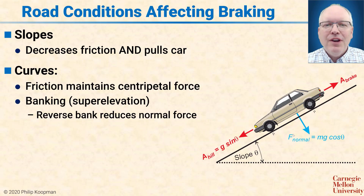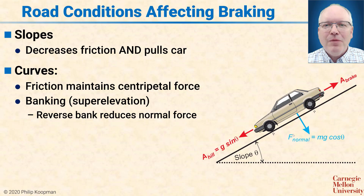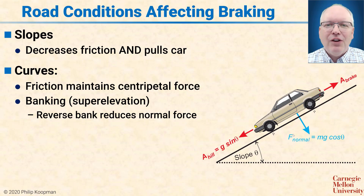Curves have similar issues. Some of that friction force of the tire contact patch is being used to pull you around the curve. That frictional force, having partially been spent on the centripetal force, leaves you less ability to brake, so it's going to be harder to brake if you happen to be in a turn. Also banking, otherwise known as superelevation, can help if the curve is banked in, but if the curve is banked out it actually further reduces the ability of the vehicle to stop because the curve is lifting the vehicle off the road surface as it goes around.